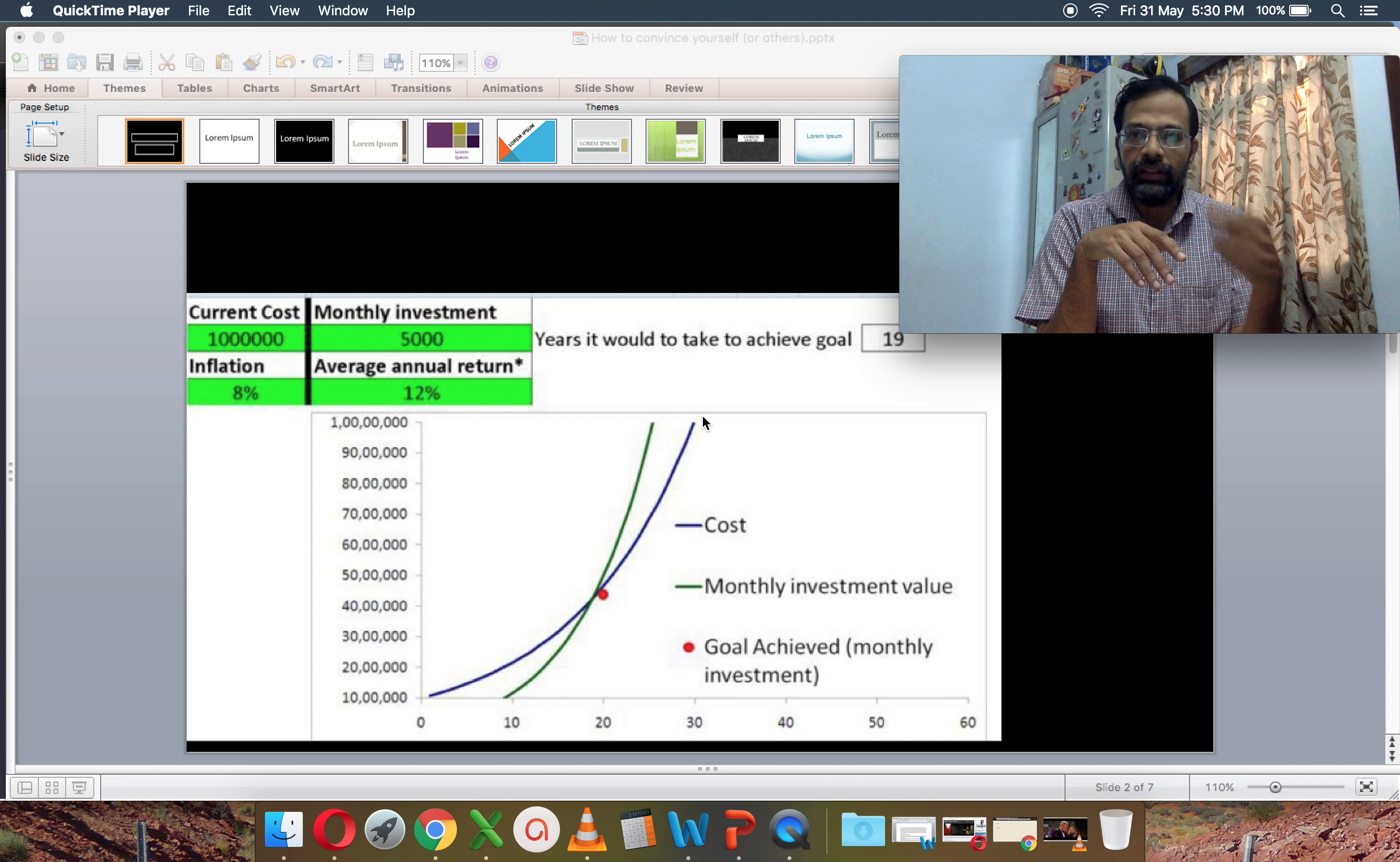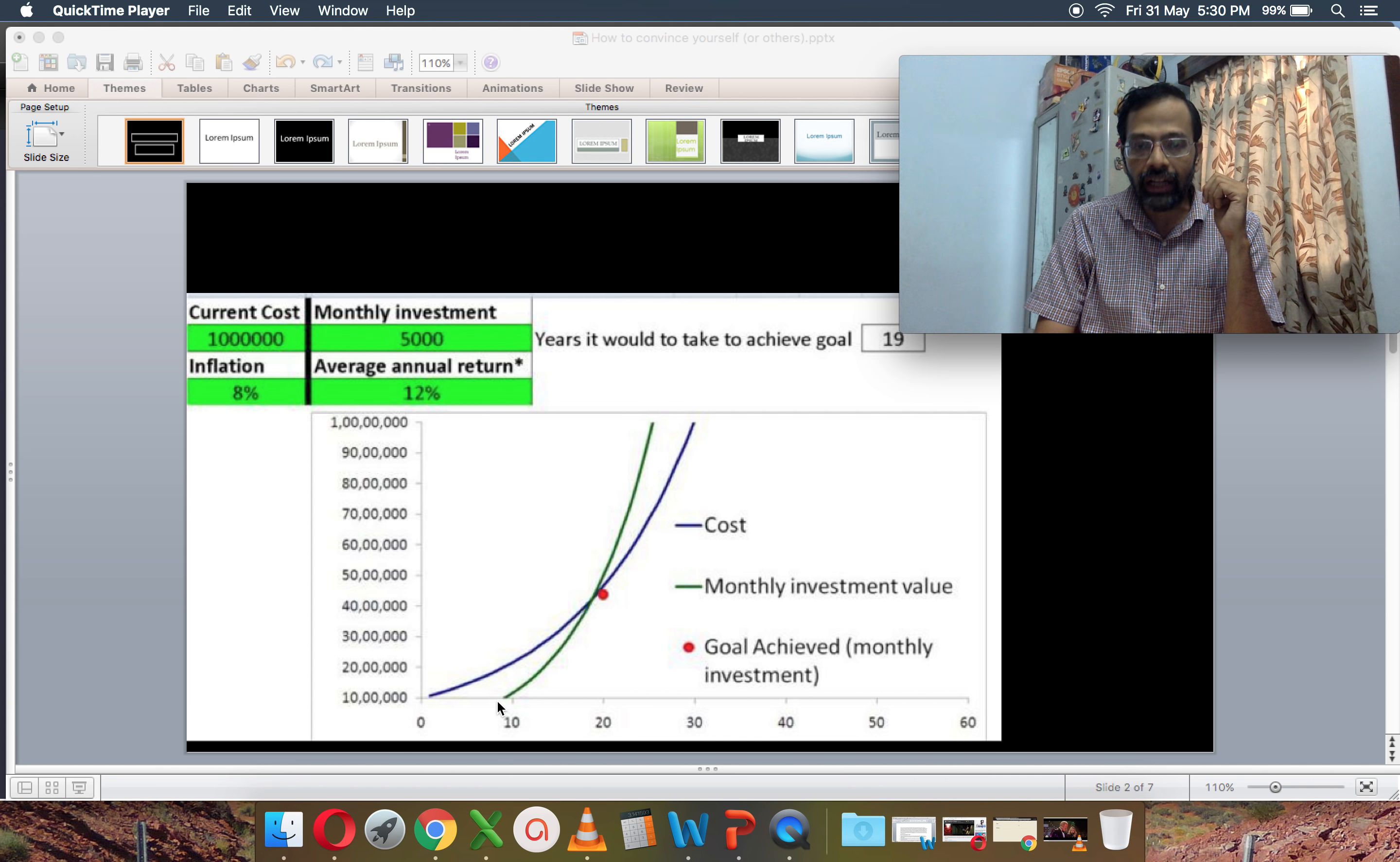So the inflation is 8%. The assumed annualized return on your investment at the end of the investing period is about 12%. So there is a gap of 4%, that's approximately the real return. The return is higher than the inflation. You call it the real return, approximately the difference, that's 4%.